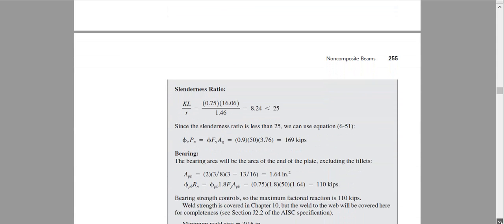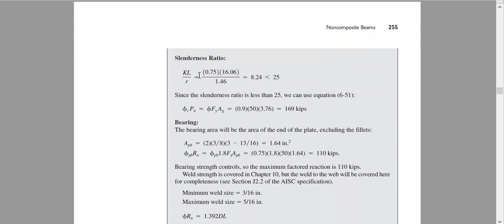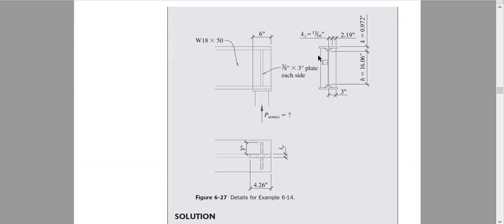Now we find the strength. If KL/R is less than or equal to 25, we use the simplified equation. K is always 0.75 for wall stiffeners. L is the length of the stiffener, which is the total D minus K top minus K bottom — that is 16.06 inches. We calculated R, and the resulting KL/R is 24.